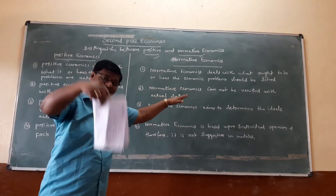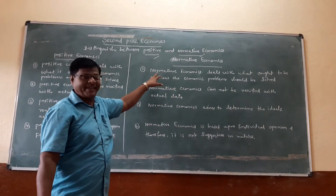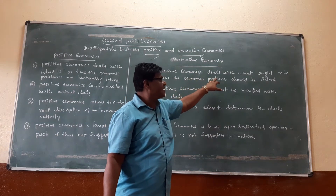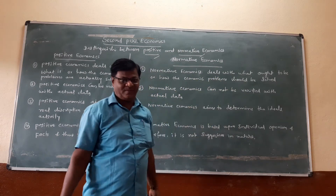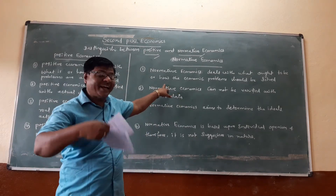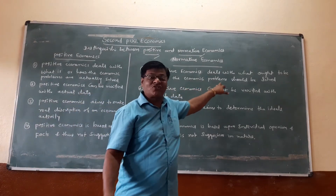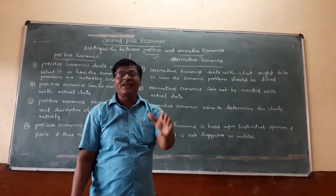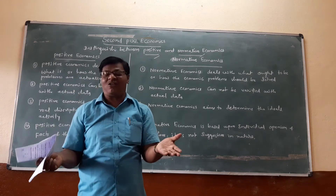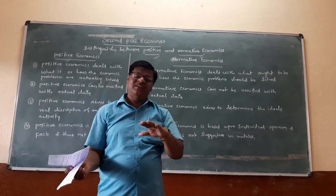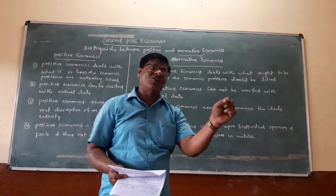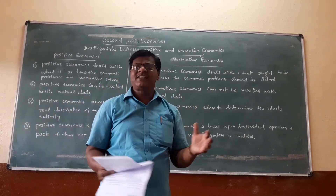In normative economics, the first point is: normative economics deals with what ought to be, or how the economic problems should be solved. This is the difference between positive economics and normative economics on the first point.